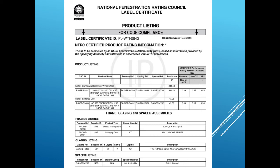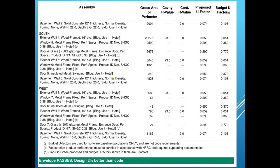Many designers use COMcheck to show energy code compliance. In a partial page from a large hotel showing design two percent better than code, the window inputs show metal frame windows with just over 2,500 square feet — but the U-value entered is 0.29, which is a typical center-of-glass value, not the overall assembly U-factor. What needs to be entered is the overall U-factor of 0.40. This is a very common mistake in COMcheck and it's easy to pick up — make sure you check.